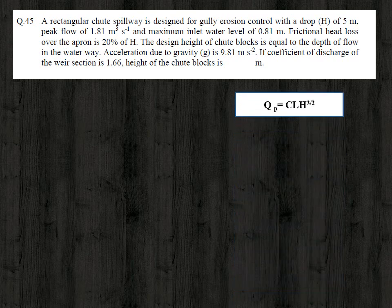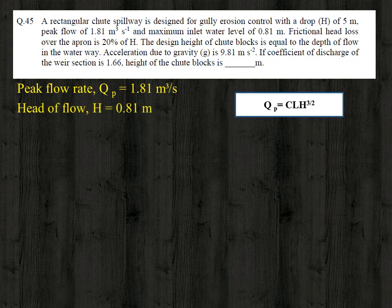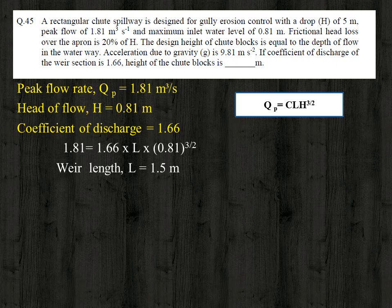The peak flow is 1.81 cubic meter per second, the head H is 0.81 meter, and C is 1.66. The only unknown is the weir length L. Substituting the values in the equation, we get the weir length as 1.5 meter.